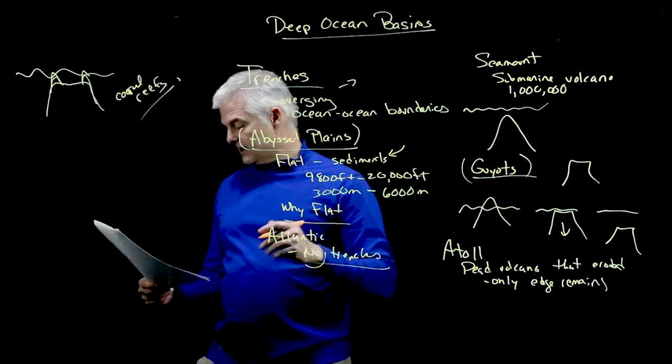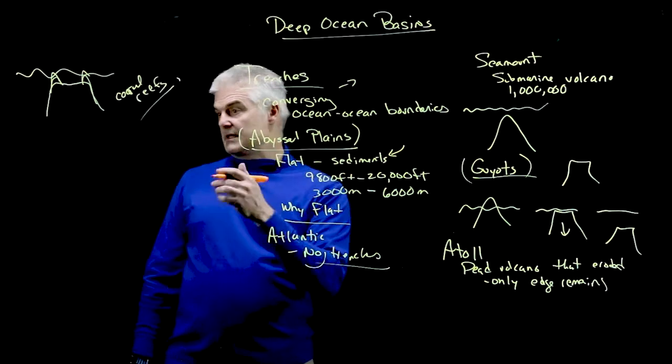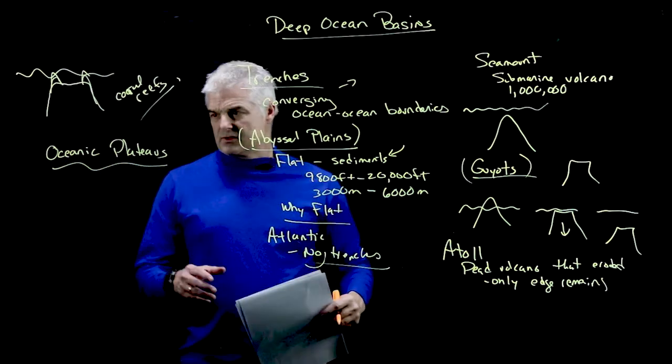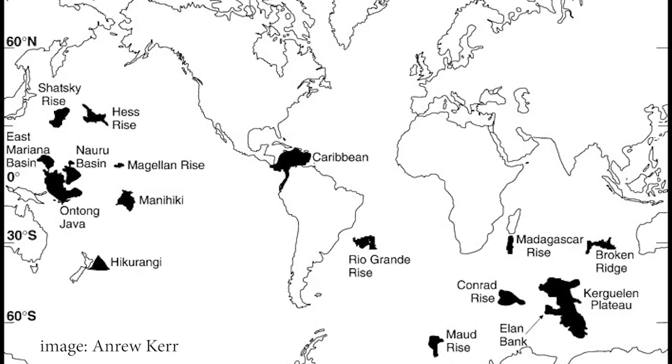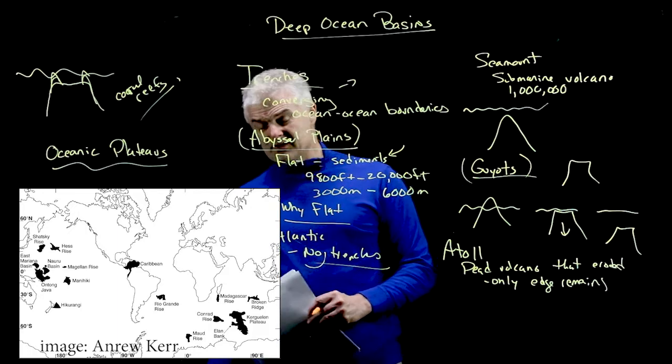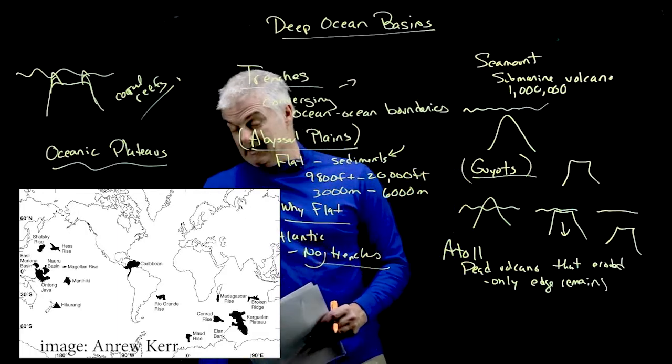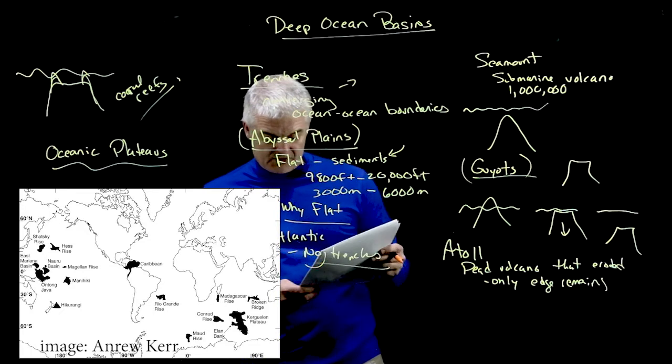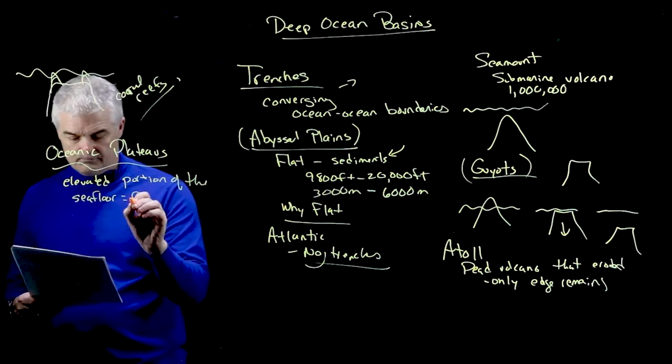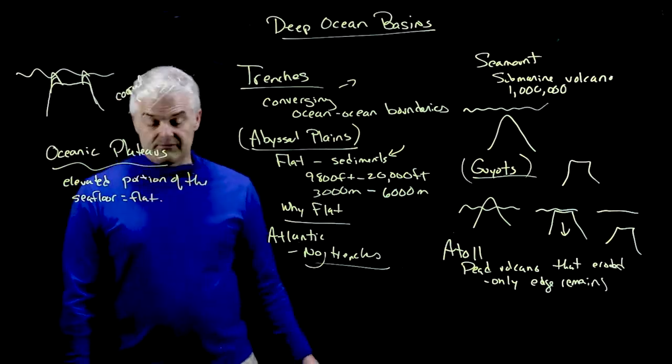The last one we're going to talk about, I think are pretty awesome too, is the oceanic plateaus. In this map you can see some different regions around the earth that are plateaus. Basically these are large rises underneath the ocean that are much less shallow. Some of these were actually continents back in the day that have eroded away. An elevated portion of the sea floor that is flat.